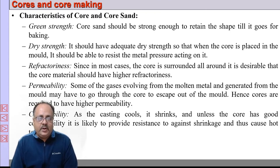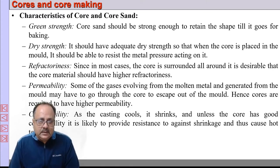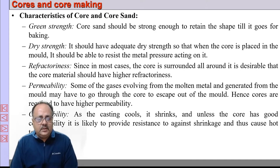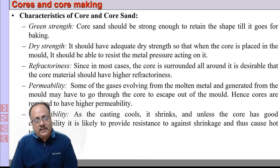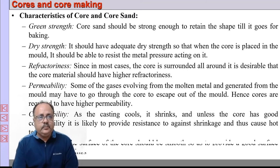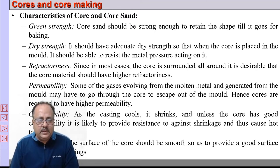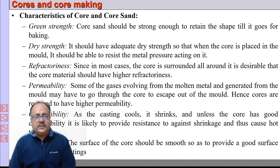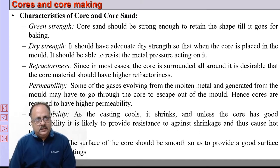An important property is collapsibility. Once the metal has solidified around the core, we should be able to break the core, take out the casting, and then remove the core — so the core should be collapsible. Additionally, it should have smoothness, meaning it should be able to give a good surface finish to the internal features of the casting. These are the required properties of a core sand.